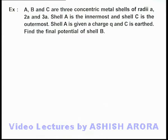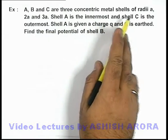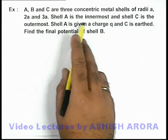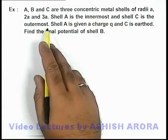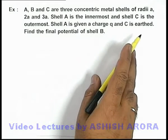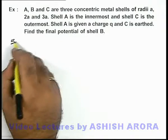In this example, we are given that A, B, and C are three concentric metal shells of radii a, 2a, and 3a. Shell A is the innermost and C is the outermost. Shell A is given a charge q and C is earthed. We are required to find the final potential of shell B.